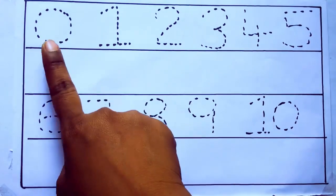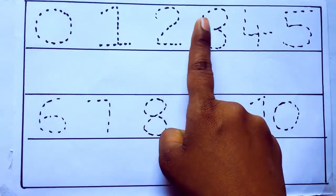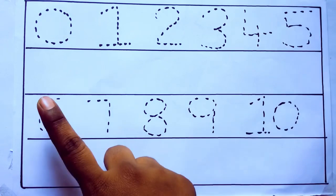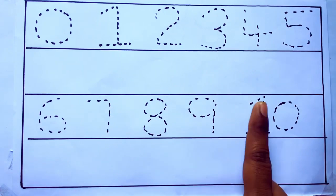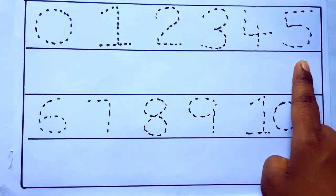0 to 10: 0, 1, 2, 3, 4, 5, 6, 7, 8, 9, 10 and rewriting the numbers.